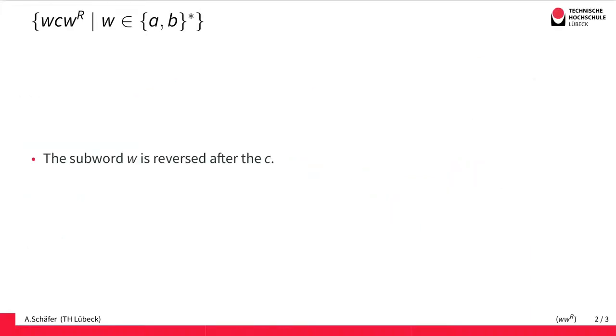Let's have a look at the formal definition of the language. The language is defined as follows. We have the set of all words such that the first part is a W, which is a word built from A's and B's, an arbitrary number of A's and B's. It can also be zero, it can be the empty word.